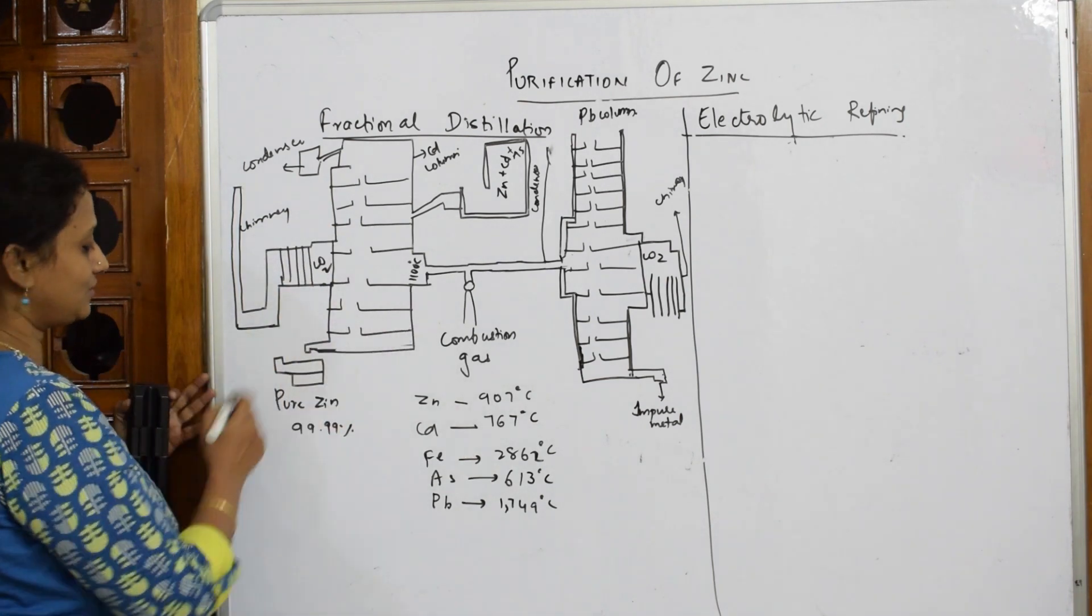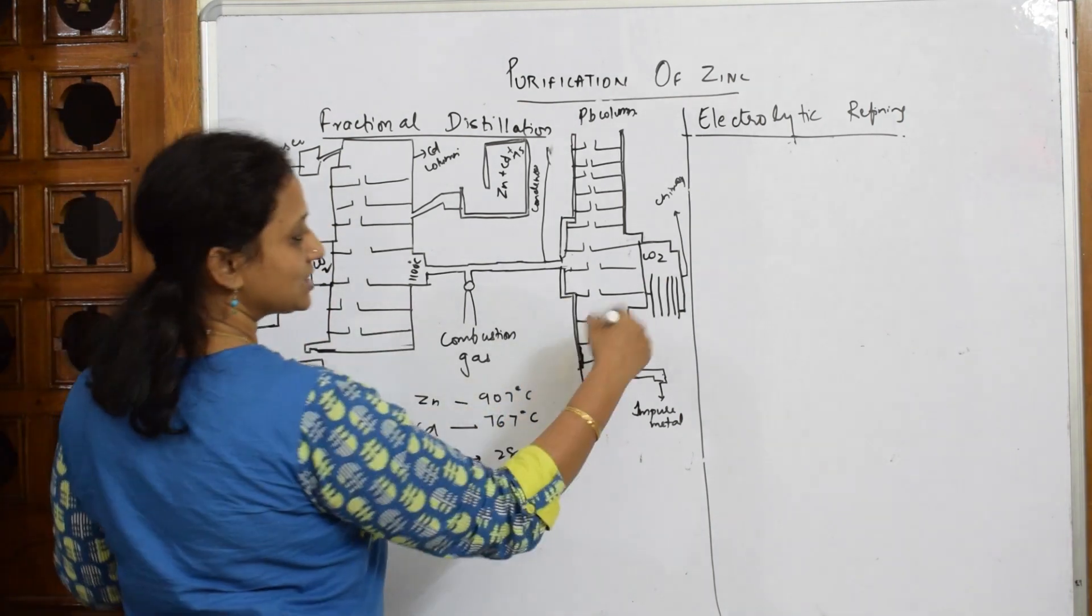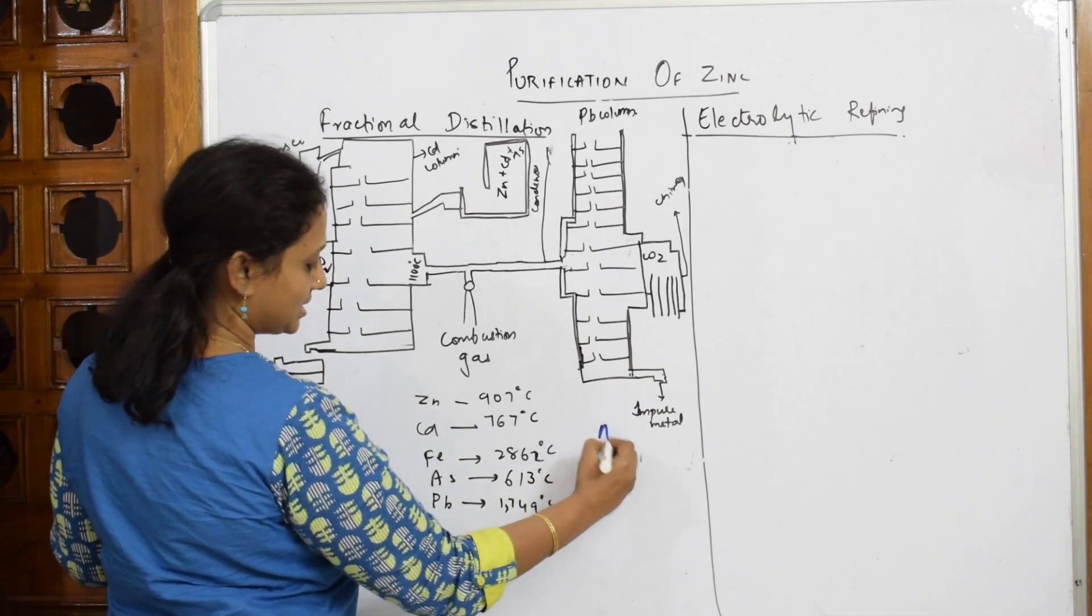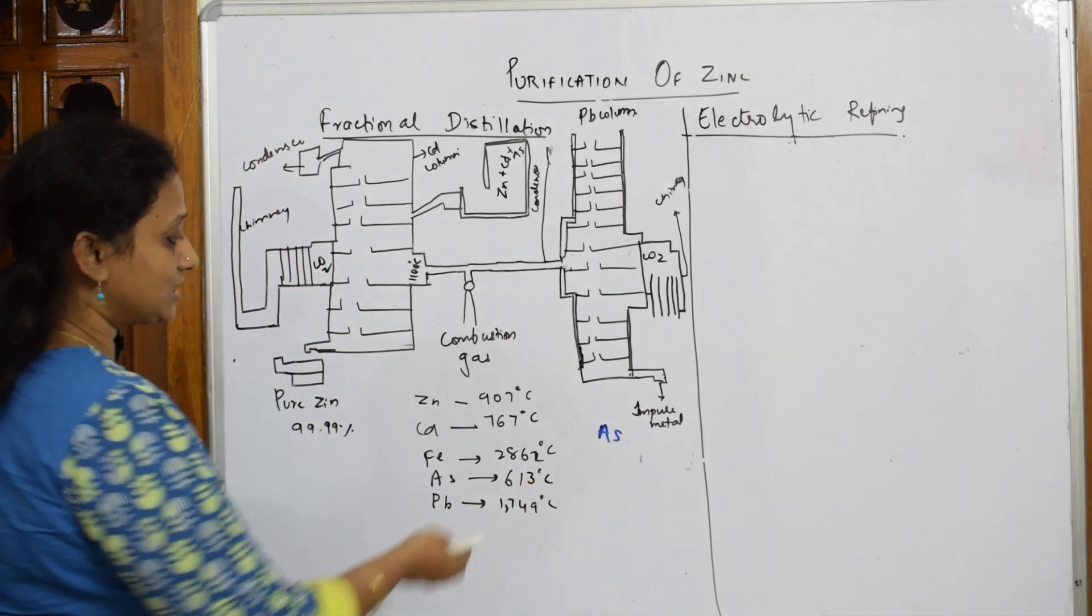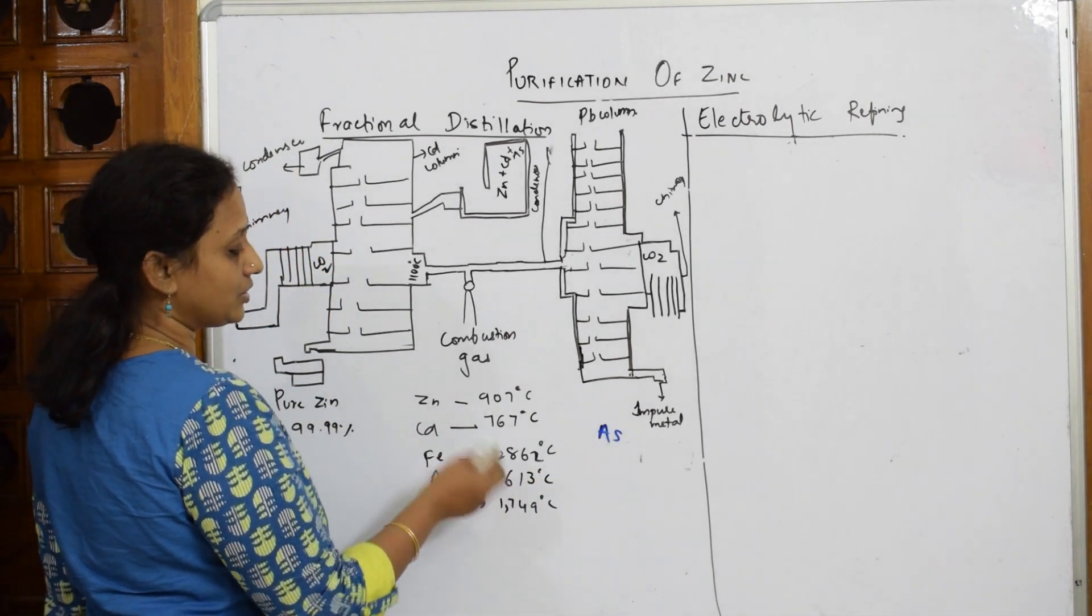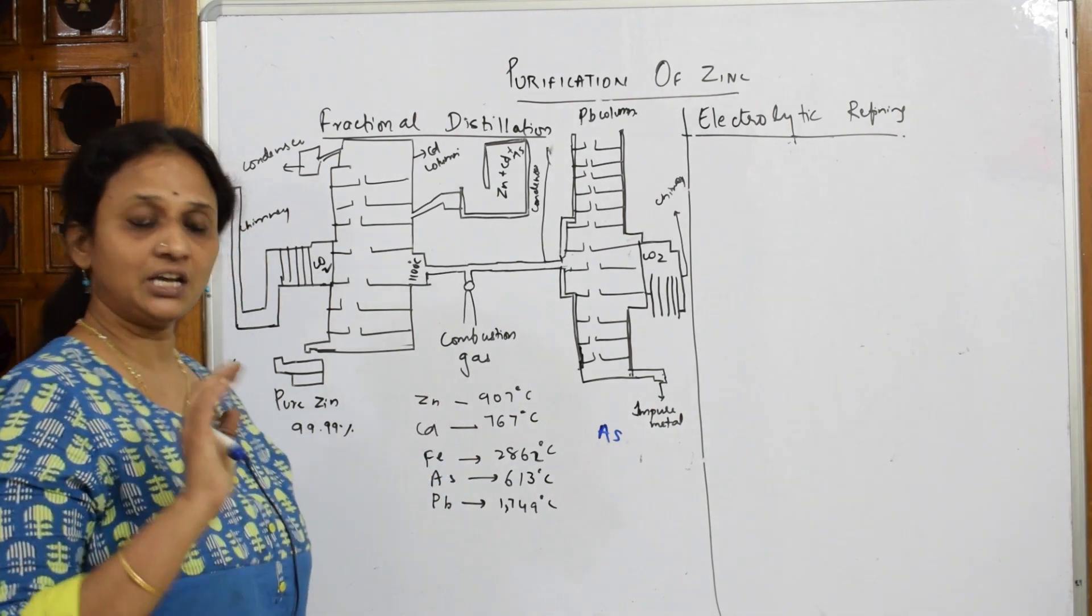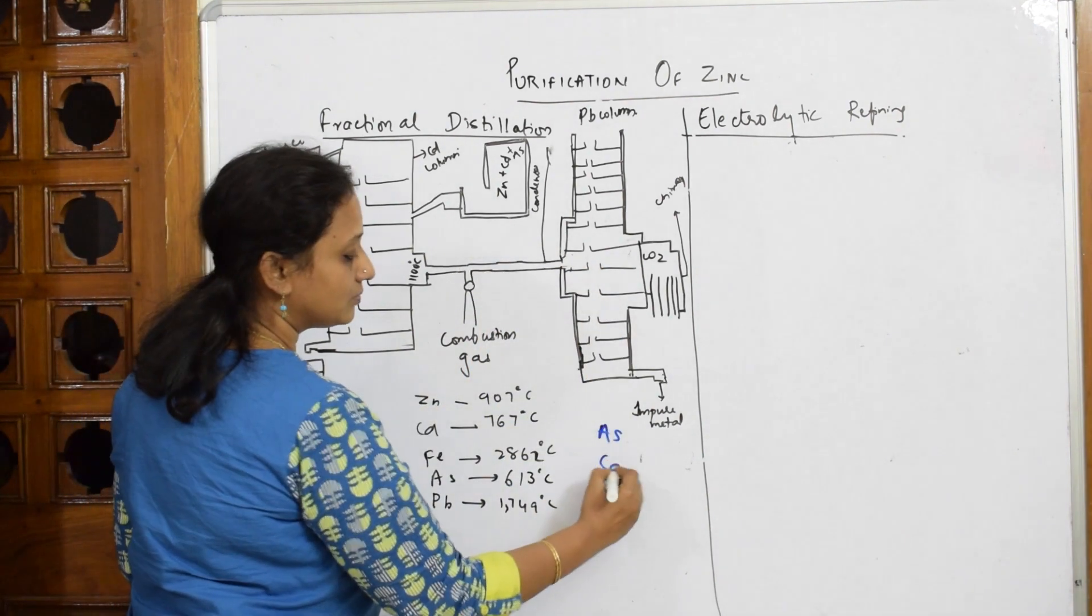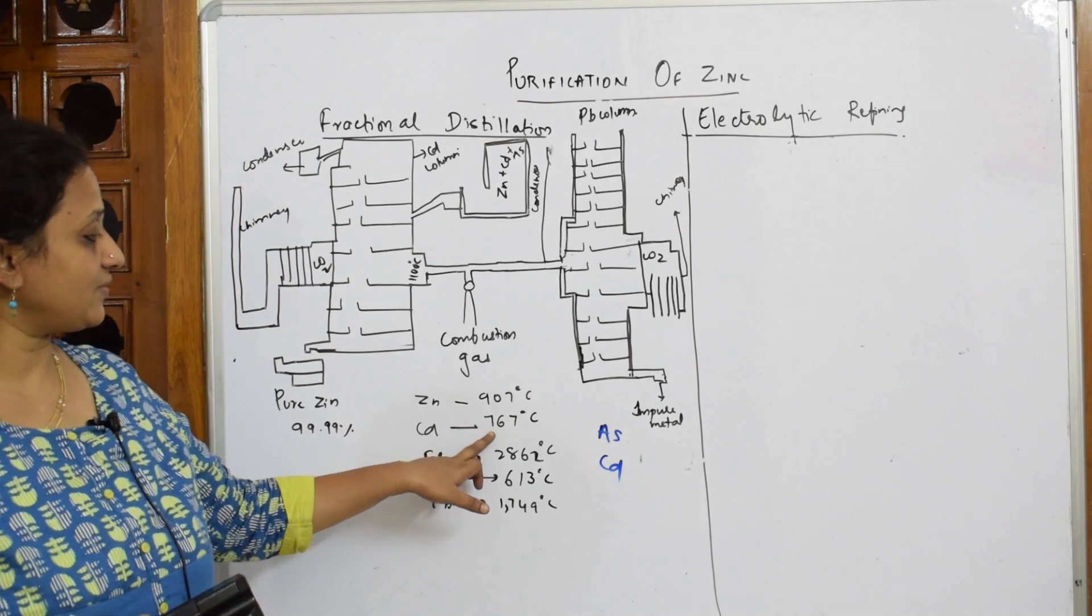After 613, when we reach 767°C, cadmium is out. After 767, you have your zinc. We know zinc's boiling point is 907 degrees. This zinc is sent through a different fractionating column where it gets condensed.